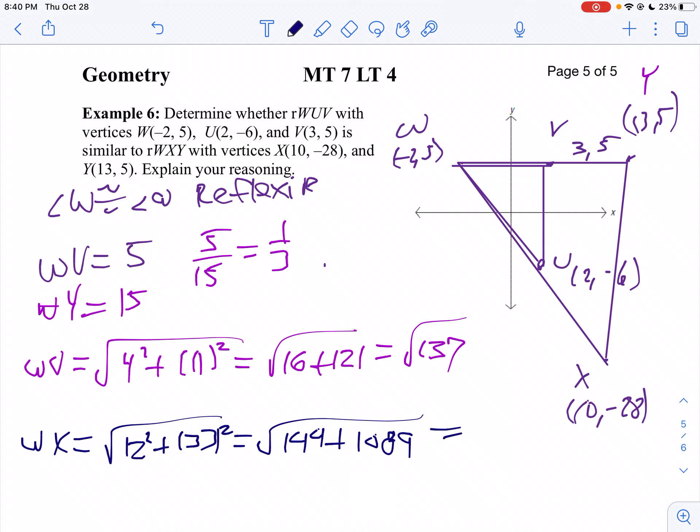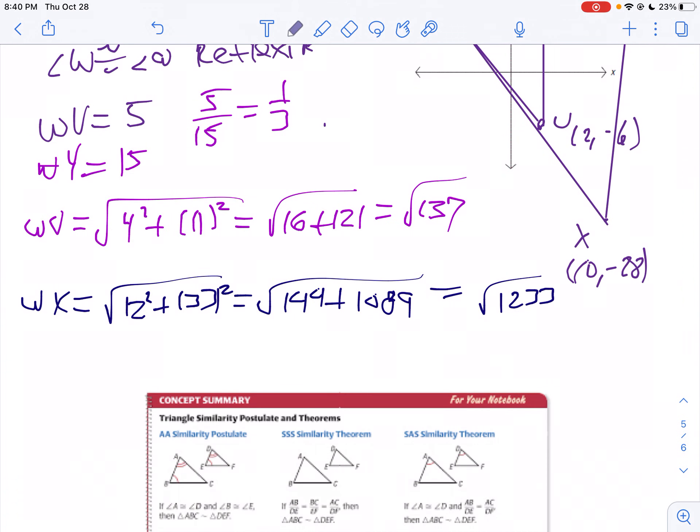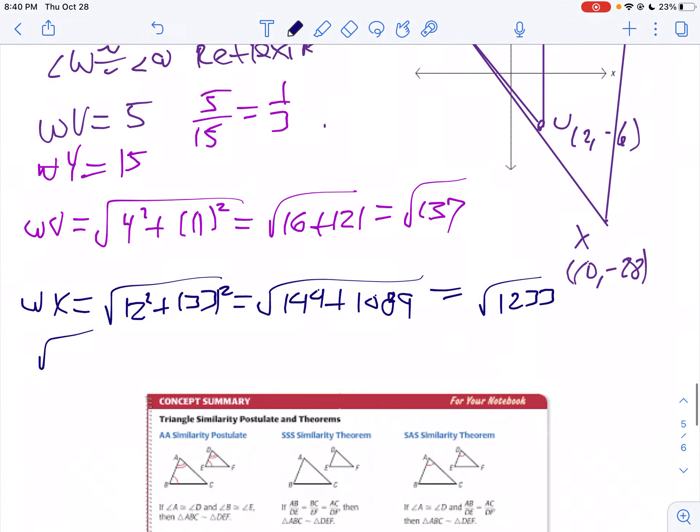So 33 squared is 1089. Add those two up. So if I go 1089 plus 144, I get 1233. So then I'm going to look at that ratio. Take a look at the square root of 137 to the square root of 1233.